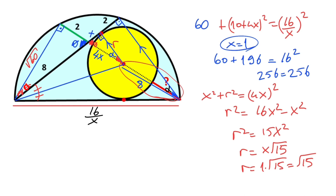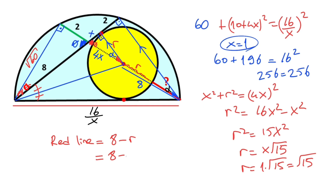Notice that this length equals 8. Therefore, the length of the red line must equal 8 minus the radius. We know the radius equals root 15, so the length of the red line equals 8 minus root 15.